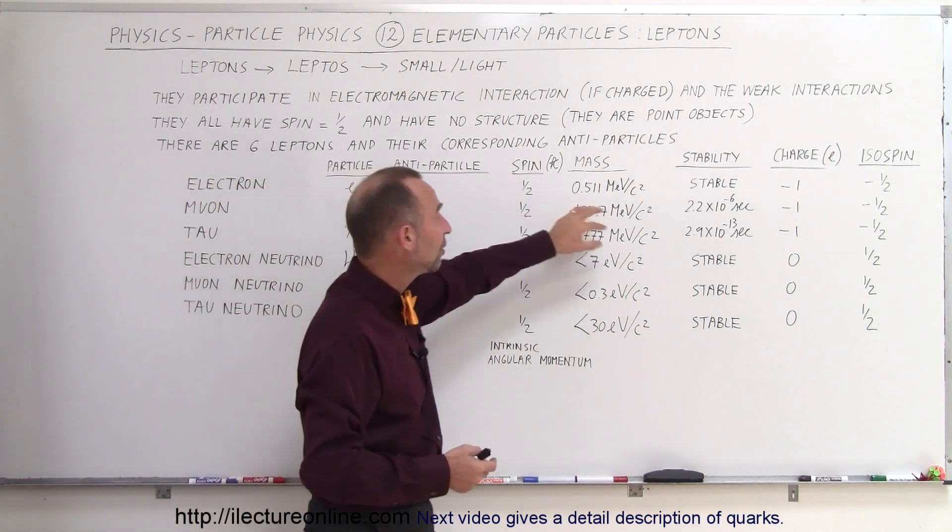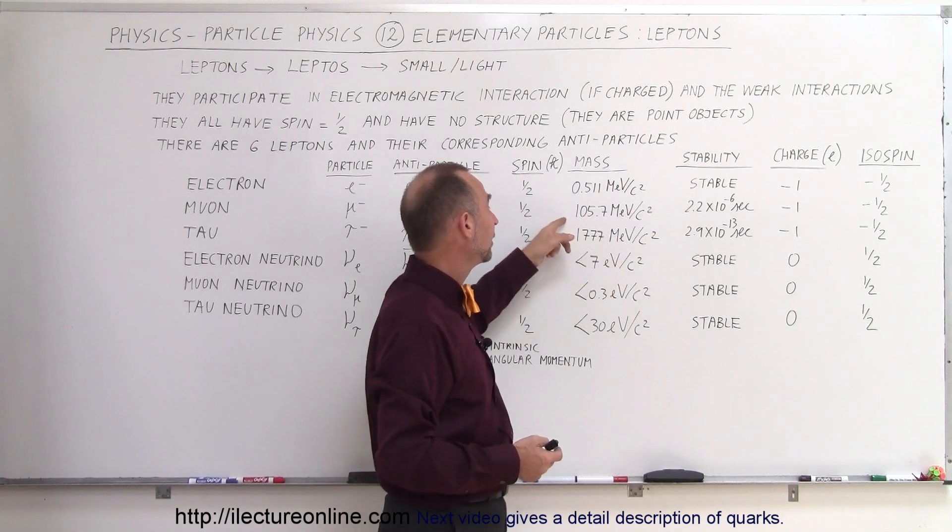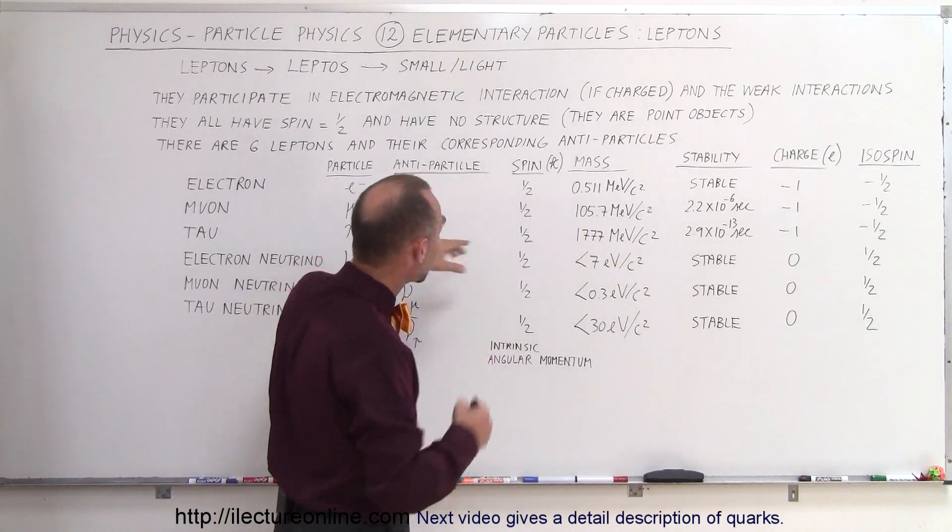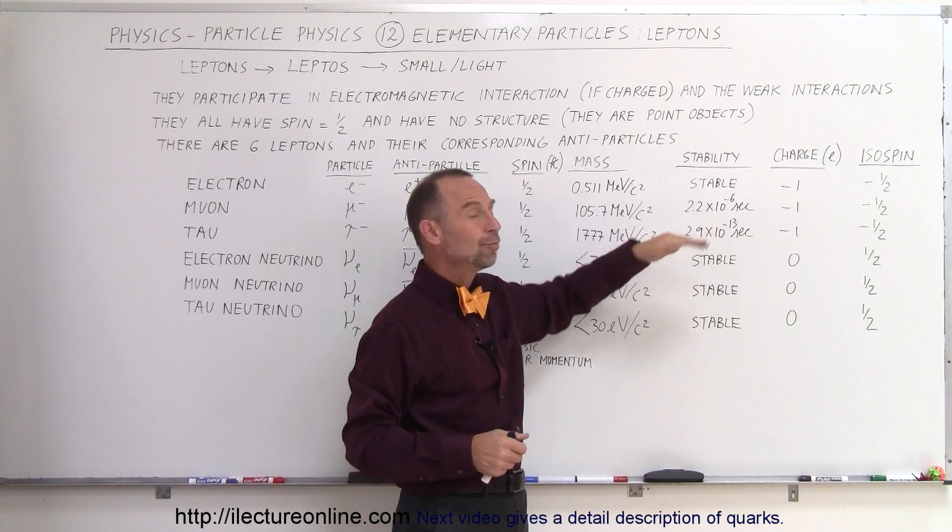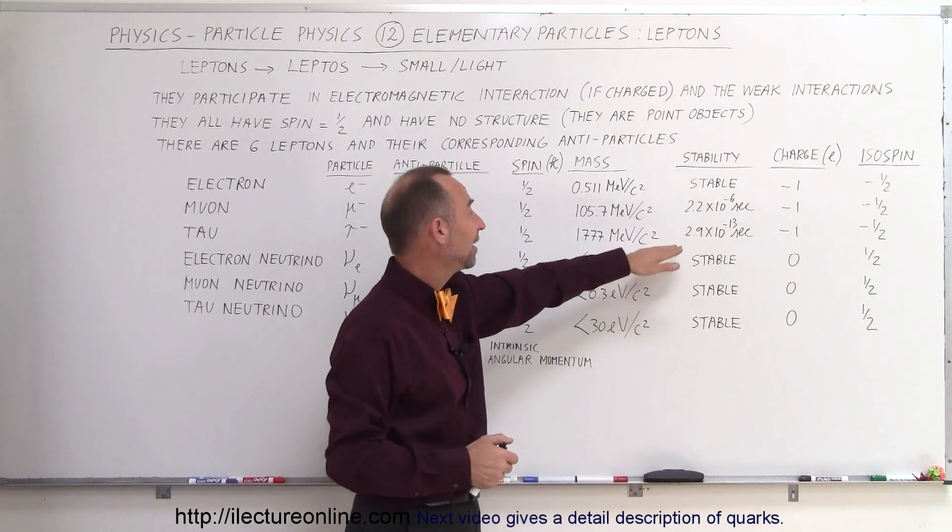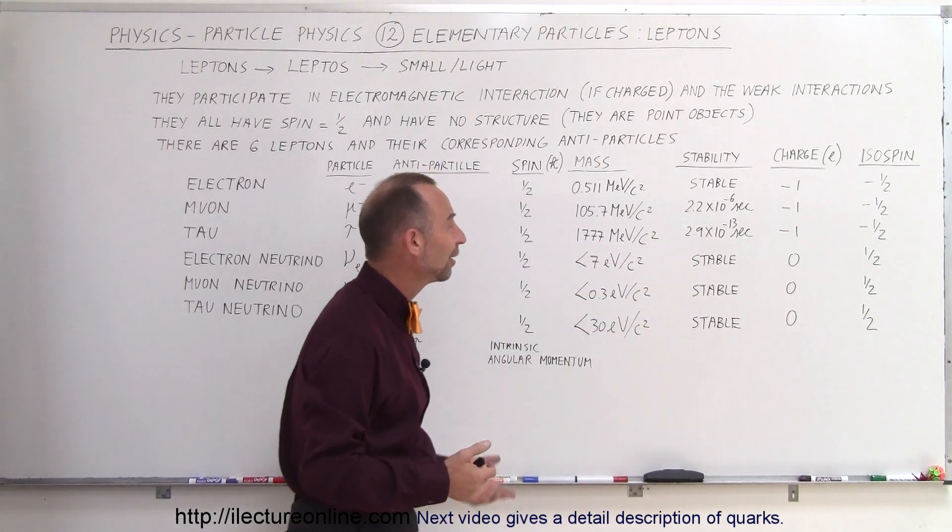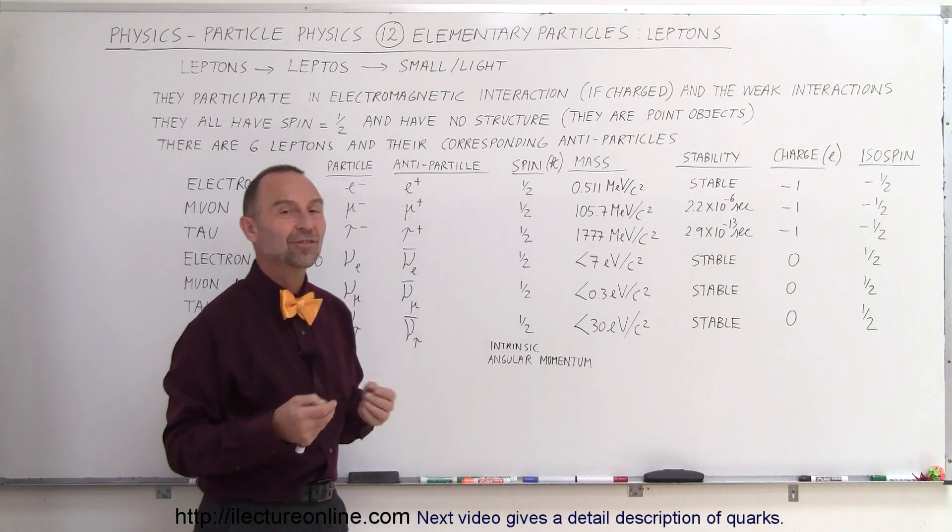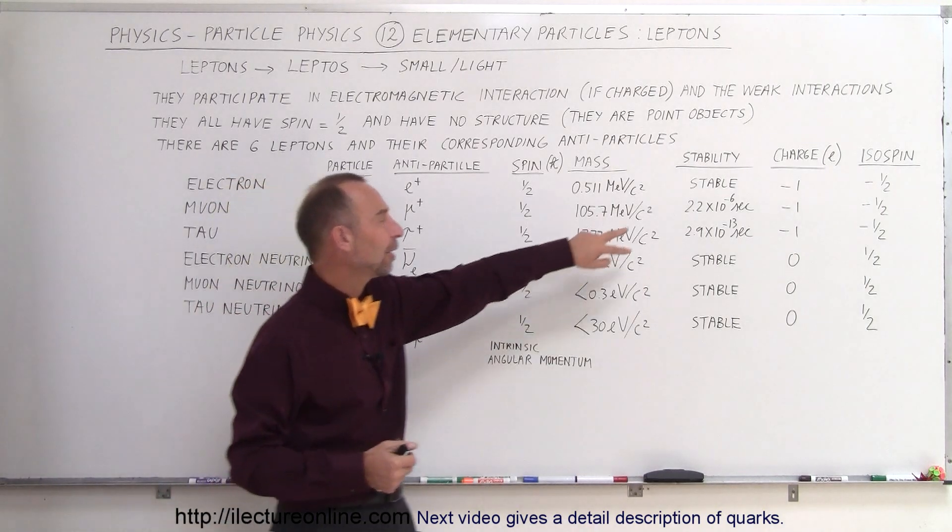Hence, these two particles tend to be very unstable. The muon only lasts for about 2.2 millionths of a second and here the tau lasts for less than a trillionth of a second before it disintegrates. So these are very unstable particles.